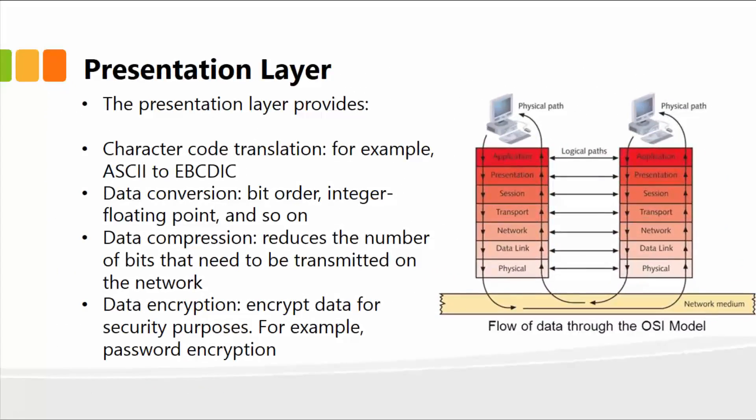Next is the presentation layer, which provides character code translation, data conversion, data compression, and encryption. This is where all of these functions happen. For instance, the data conversion is the bit order, integer floating point, and so on. The compression includes reducing the number of bits that need to be transmitted on the network. And of course, encryption of data for security purposes, such as password encryption.